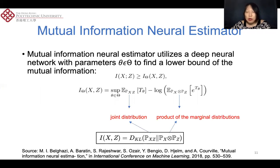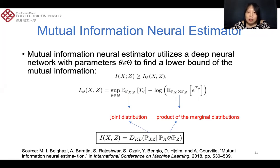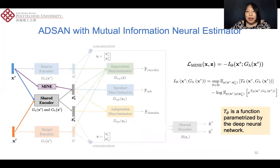Traditional approaches to mutual information estimation are non-parametric or rely on approximate assumptions about data distribution, and these approaches do not scale well with sample size or dimension. The mutual information neural estimator (MINE) proposed by Belghazi can help address these issues. The main idea is that mutual information can be computed through the KL divergence between the joint distribution and the product of the marginal distributions of two variables, using a dual representation. The larger the divergence between the joint and the product of marginals, the stronger the dependence between x and z.